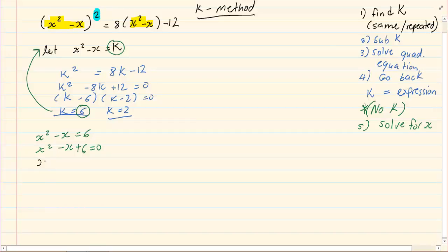We would have (x - 3)(x + 2) = 0, x - 3 = 0, x + 2 = 0, x = 3, x = -2.